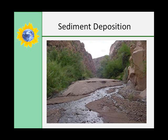When stream velocity slows down, usually due to a reduction in the angle of slope or the stream entering a larger body of water such as a lake or ocean, sediments fall out of suspension and settle to the bottom in a process called deposition. The fate of all sediments is eventually to be moved from a source area to a basin, where sediments accumulate by deposition.